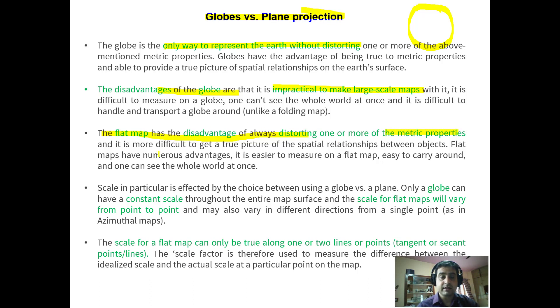And the flat map has the advantage of distorting one or more of the metric properties. It is more difficult to get true picture of the spatial relationships between objects. So flat maps have numerous advantages. It is easier to measure on a flat map, easy to carry around, unlike the globe, and one can see the whole world at once. Only a globe can have a constant scale and the scale for flat maps will vary from point to point. The scale of flat map can only be true along one or two lines or points, tangent or secant points or lines. The scale factor is therefore used to measure difference between idealized scale and the actual scale at a particular point on the map.